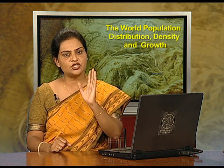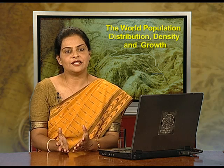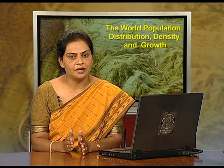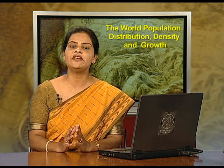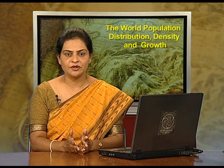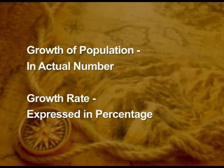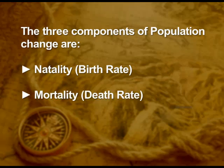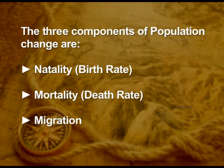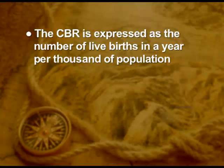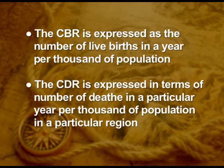Population growth refers to any change in the number of inhabitants. If we calculate population growth numerically in actual numbers, it is population growth. If we express it in terms of percentage, it will be the growth rate. Growth of population is in actual numbers, while growth rate is always expressed in percentage. The three components of population change are natality, mortality and migration. The crude birth rate is expressed as the number of live births in a year per thousand of population in a particular region.